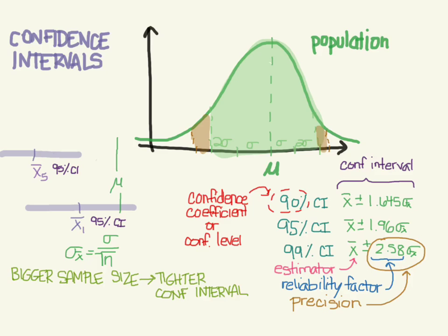5% of the time, we're going to miss the sample mean. But for any particular one, we don't really know that it's in or not. But we have 95% confidence that it is because 95% of the time it is going to be.